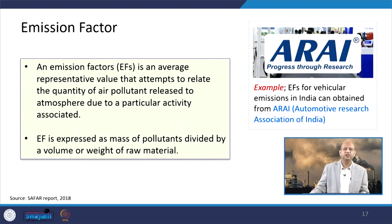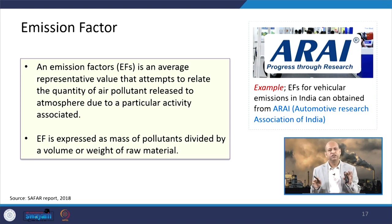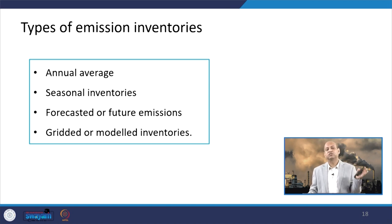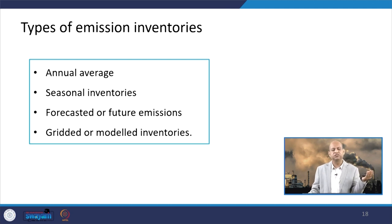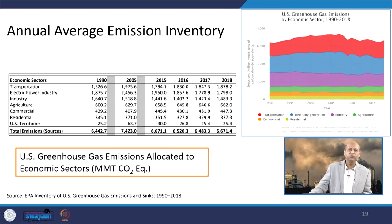The emission factor is an average representative value that attempts to relate the quantity of air pollutant released into the atmosphere from a particular activity — it can be per kilometer driven by a vehicle or per kg of coal burnt. Types of emission inventories can be annual average or seasonal inventories, forecast or future emissions inventories, gridded or modelled emission inventories, greenhouse gas emission inventories — you name the purpose and the pollutant or region, and the emission inventory varies accordingly.